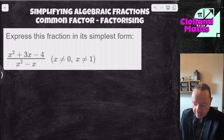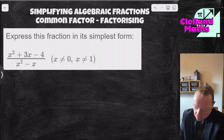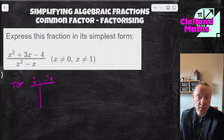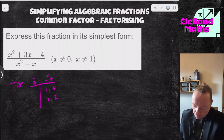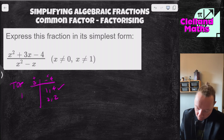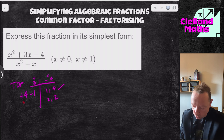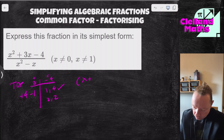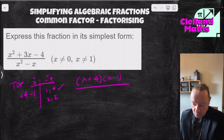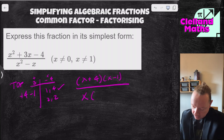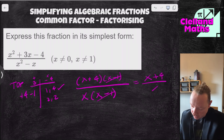Express x² plus 3x minus 4 over x² minus x in simplest form. For the top, I need two numbers that multiply to minus 4 and add to 3 — that's plus 4 and minus 1. So the top factorises to (x+4)(x-1). The bottom, x² minus x, has a common factor of x, giving x(x-1). The (x-1)s cancel, leaving x plus 4 over x.